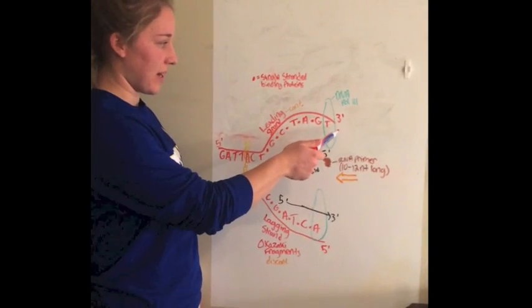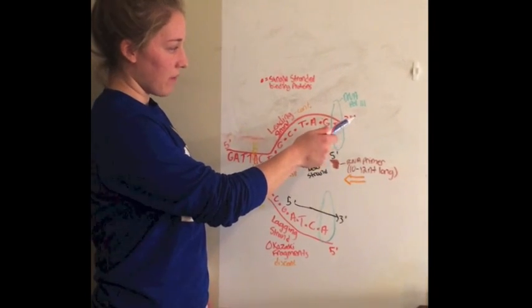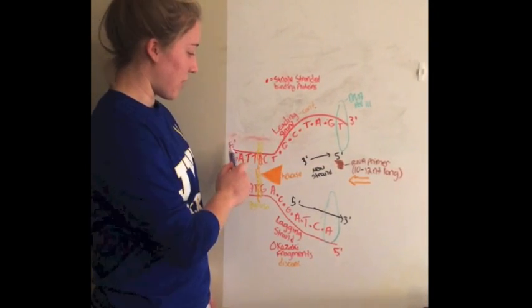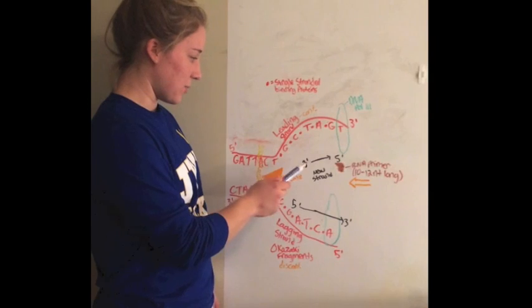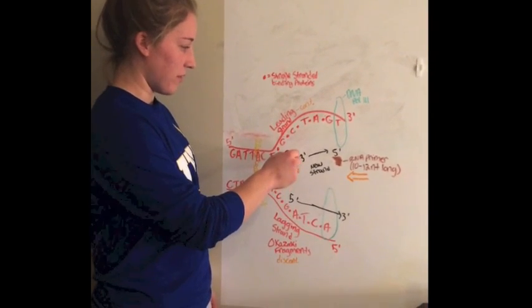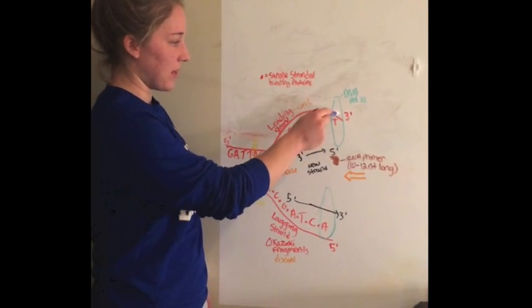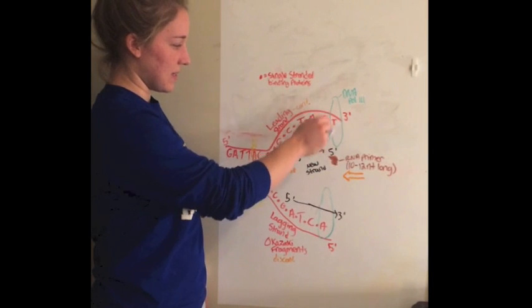So since this is being, the DNA polymerase is moving from 3' to 5' here. The new strand is also moving from 3' to 5' but as you can see it's reversed.